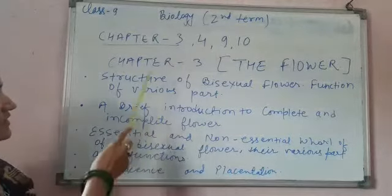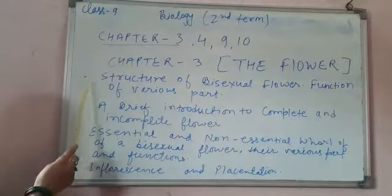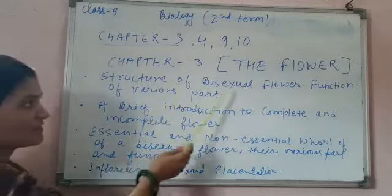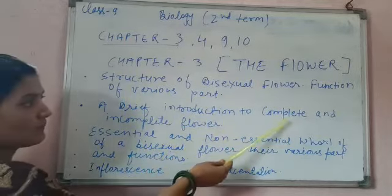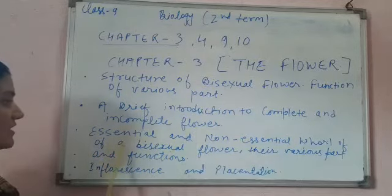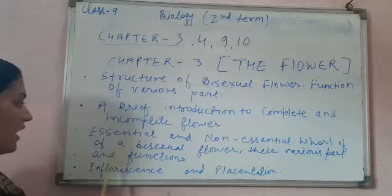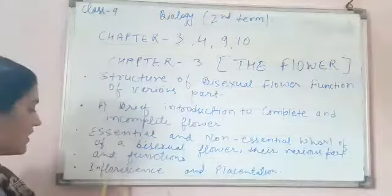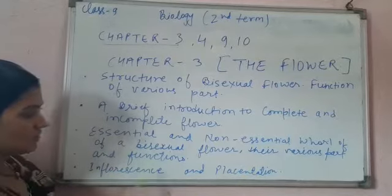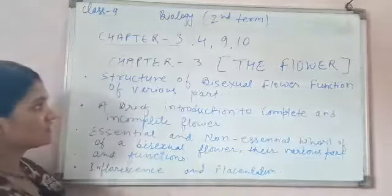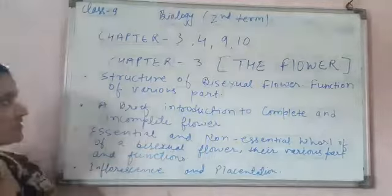Now we are going to start chapter 3. Chapter 3 is the flower, in which we have to study these topics: structure of bisexual flower, function of various parts, a brief introduction to complete and incomplete flower, essential and non-essential whorls of a bisexual flower, their various parts and functions, and next topic is inflorescence and placentation — we have to study only the introduction of these two terms. Let's start the first topic of chapter 3, that is structure of bisexual flower and their functions.